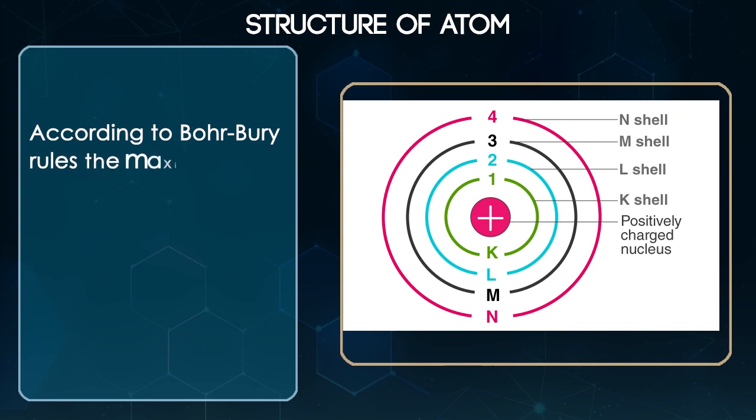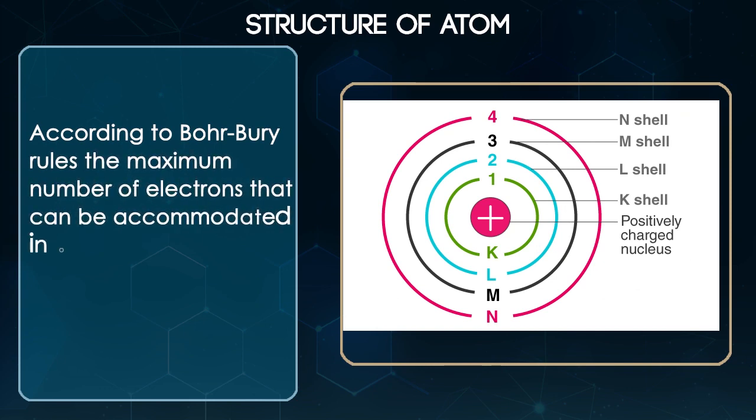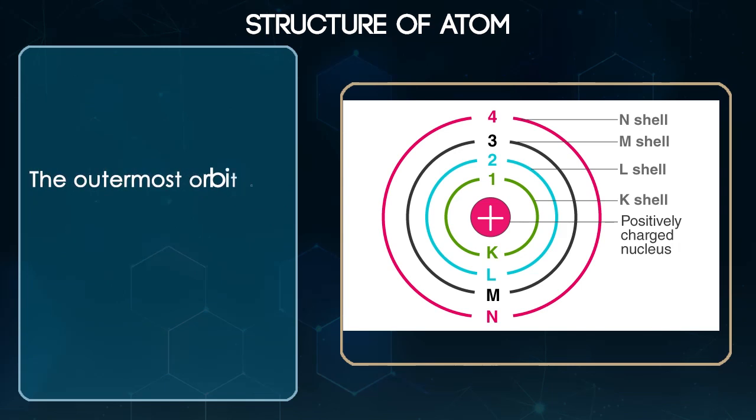According to Bohr-Bury rules, the maximum number of electrons that can be accommodated in orbit is given by 2n square where n is equal to 1, 2, 3 and so on. The outermost orbit cannot have more than 8 electrons.